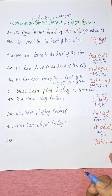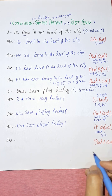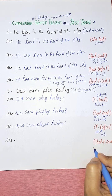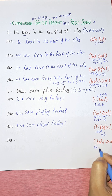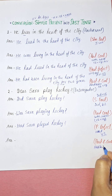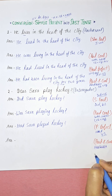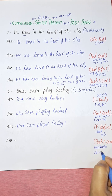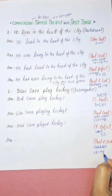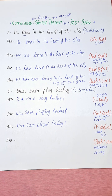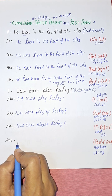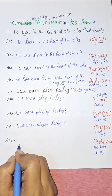The last one is past perfect continuous tense. Its helping verb is 'had been' and as a main verb we use the present participle form of the verb again.